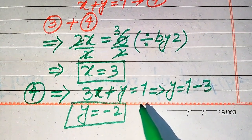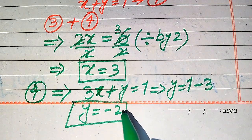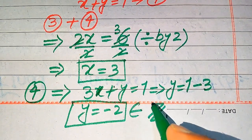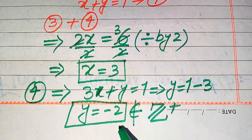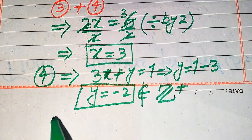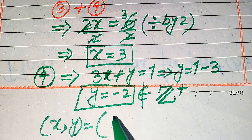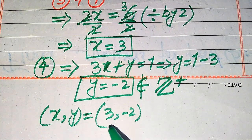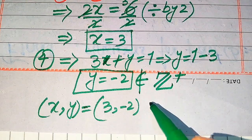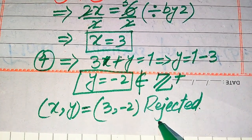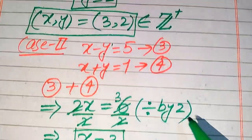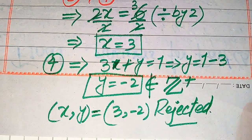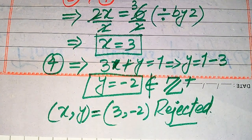In the given question we require positive integer values for x and y, but here y equals minus 2, which is a negative integer and does not belong to the positive integers. This means Case 2 cannot give us a positive integer solution and we reject this case. Therefore we have only one solution to the given equation: (x, y) equals (3, 2). This is our final answer. Thank you for watching — please subscribe to my channel for more exciting videos.